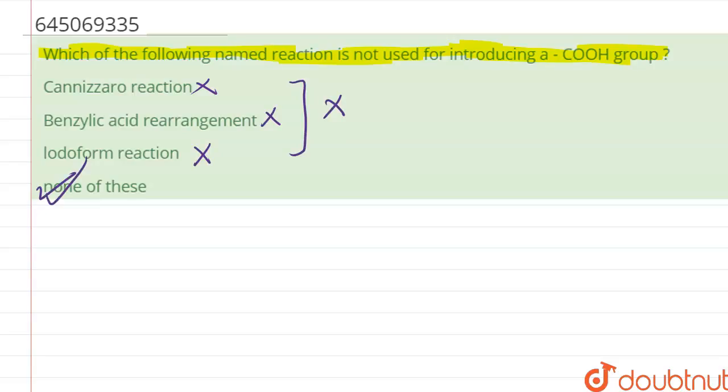For example, if we want a reaction which is not for introduction of COOH group, it should be Baeyer-Villiger oxidation, which involves the conversion of